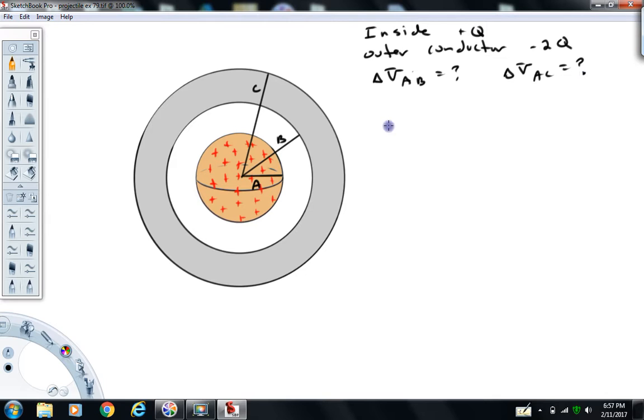All right, so calculating potential difference. The potential difference between two points is minus the integral E dot dS, where the dS is small displacements going along the path between the two points you're calculating potential from.